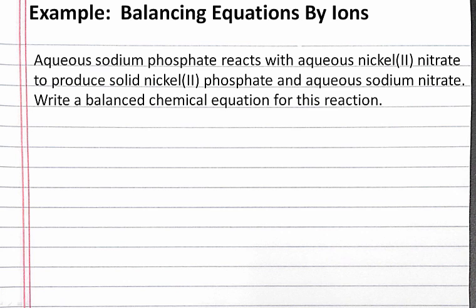Our problem reads: aqueous sodium phosphate reacts with aqueous nickel(II) nitrate to produce solid nickel(II) phosphate and aqueous sodium nitrate. Write a balanced chemical equation for this reaction.